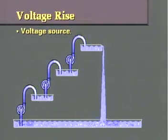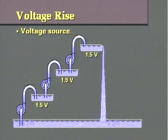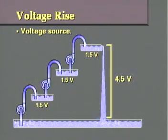A voltage rise is the same as a voltage source. Each of these series-connected pumps represents a voltage rise. If there was only one pump, we would have a voltage rise of 1.5 volts. But because there are three pumps, we have a total voltage rise of 4.5 volts.